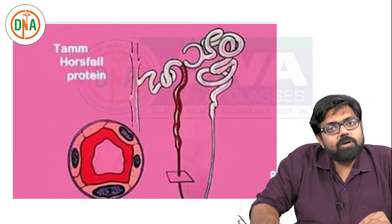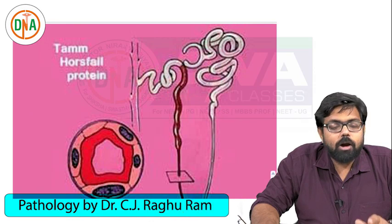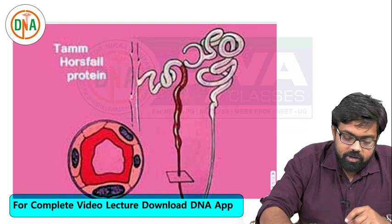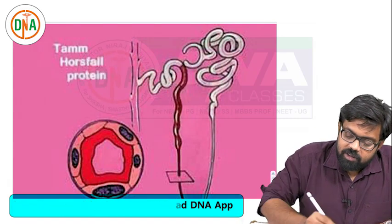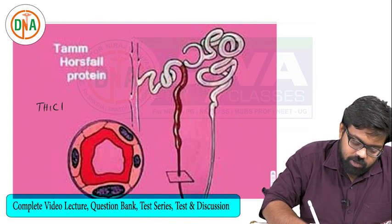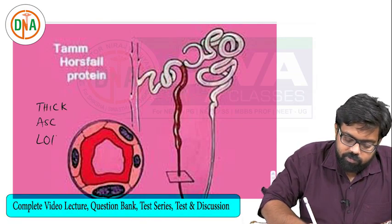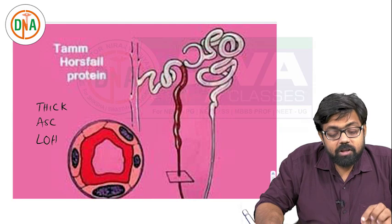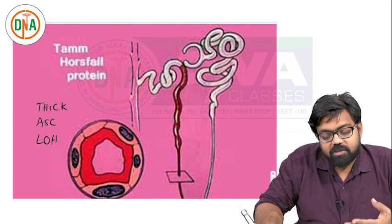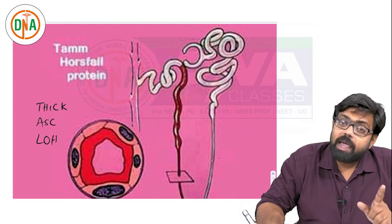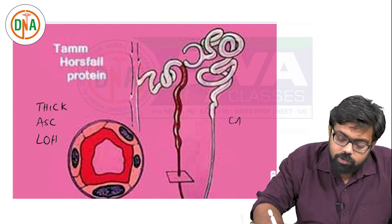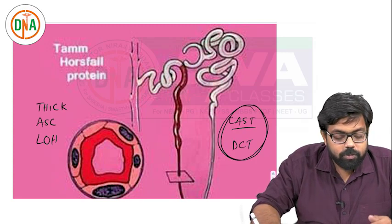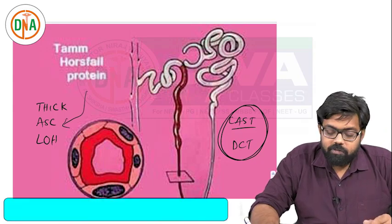An important topic is the normal protein secreted by the tubular epithelial cell called Tamm-Horsfall protein. A frequently asked MCQ is which structure produces this protein - it is nothing but the thick ascending loop of Henle. This protein combines with other substances to form casts. Cast formation occurs in the distal convoluted tubule. Don't confuse these two - Tamm-Horsfall protein is produced in the thick ascending loop of Henle, but cast is formed in the distal convoluted tubule.